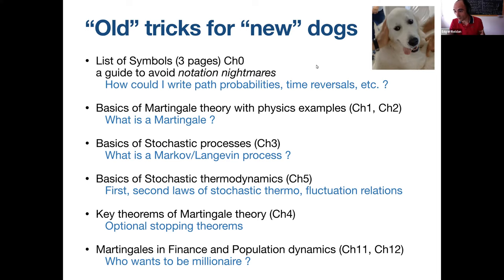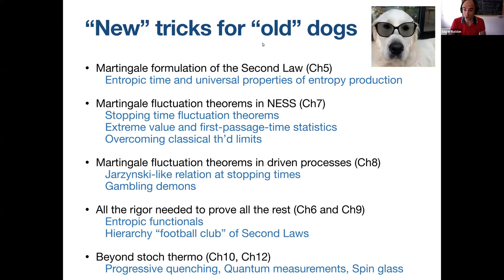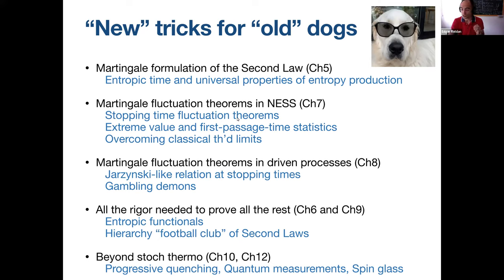There are also new tricks for old dogs: if you have been working in stochastic thermodynamics, you can use martingales to derive new universal results in non-equilibrium steady states or driven processes. There is a real collection of techniques you can find by applying martingales. We also include rigorous chapters — two very technical ones for the mathematically oriented — and applications in other fields like quantum or spin glass systems.